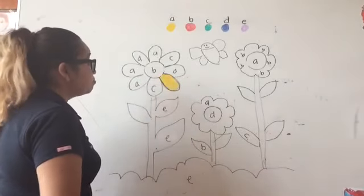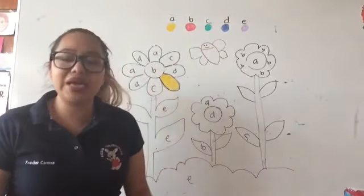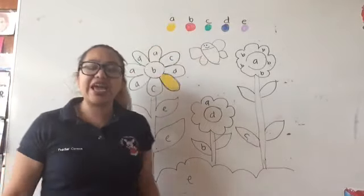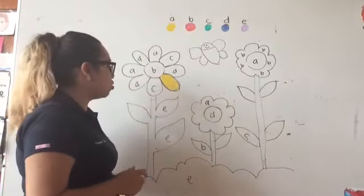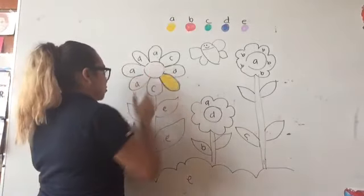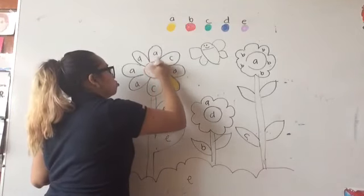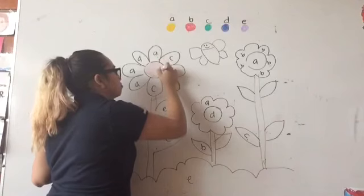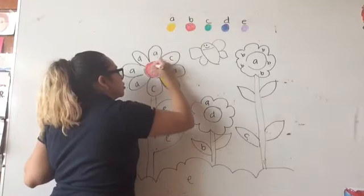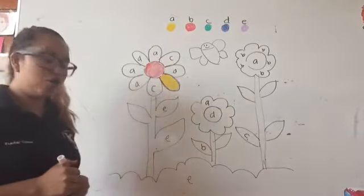For example, what is this letter? Letter B — what color does it mean? Red. Excellent. Let's find where I have the letter B. I have one right here. Please color it red. I have one right here. Excellent.